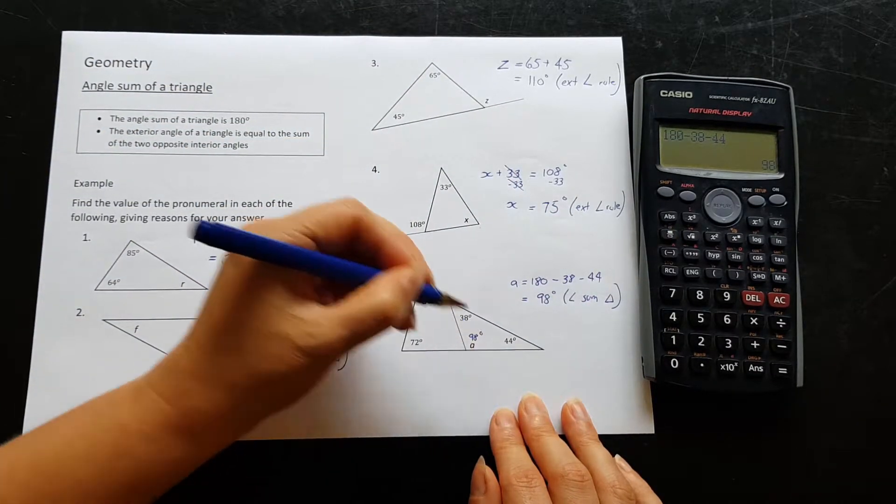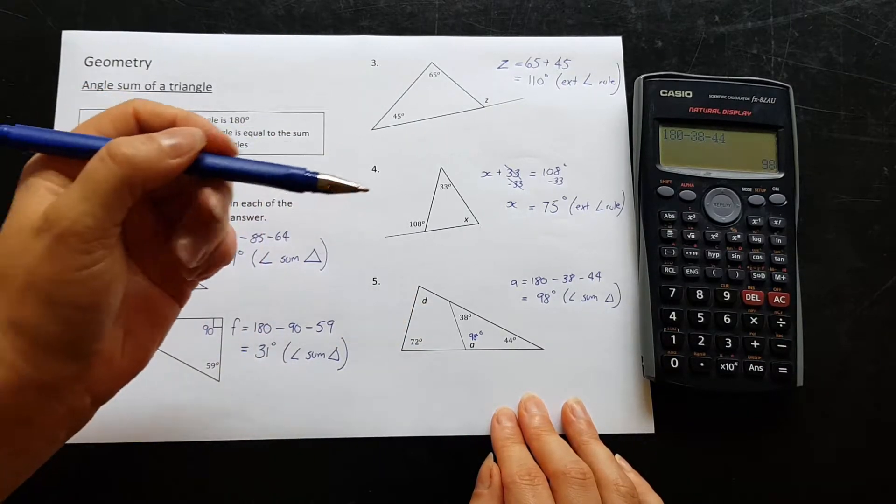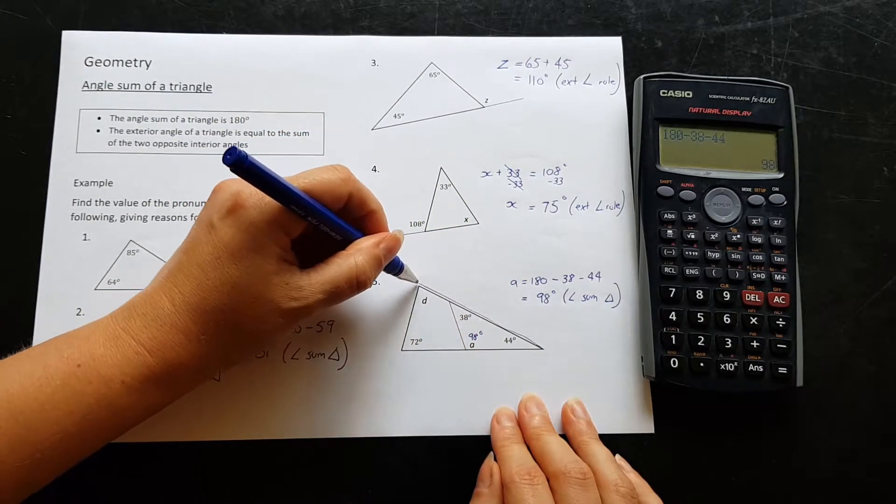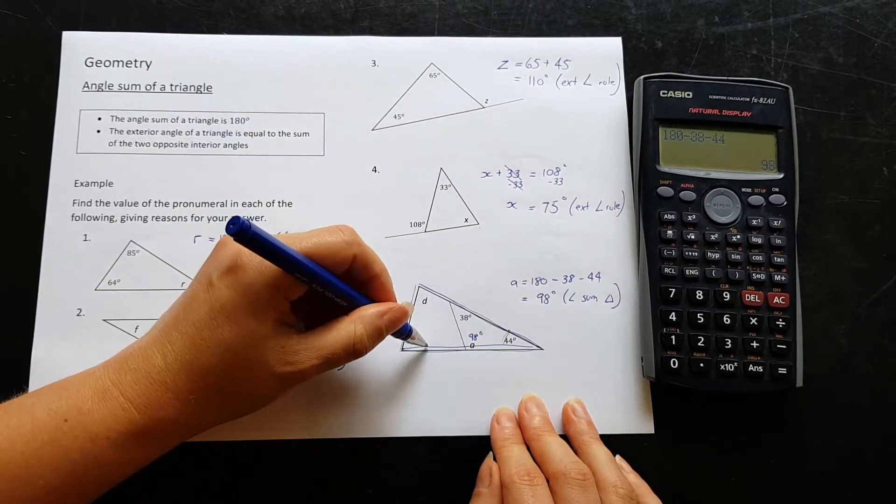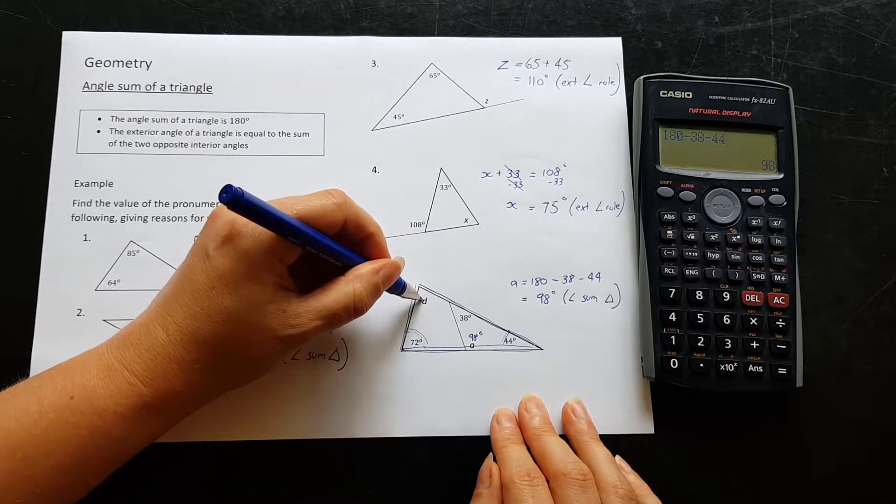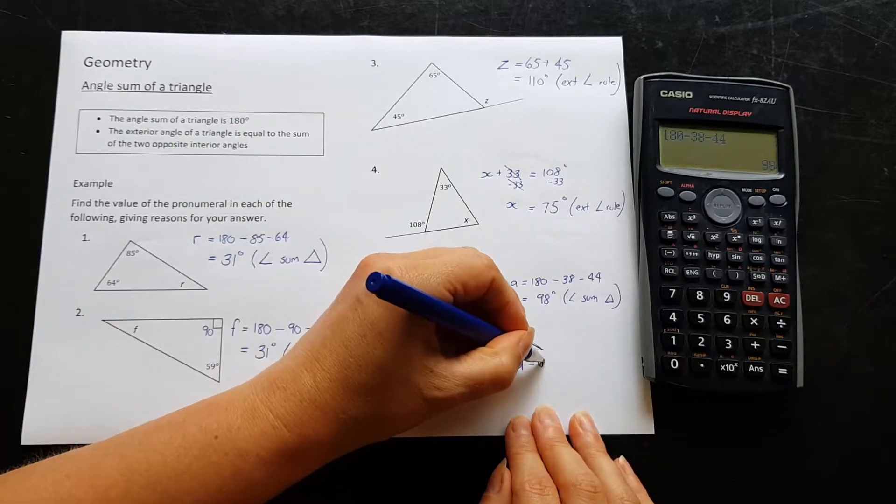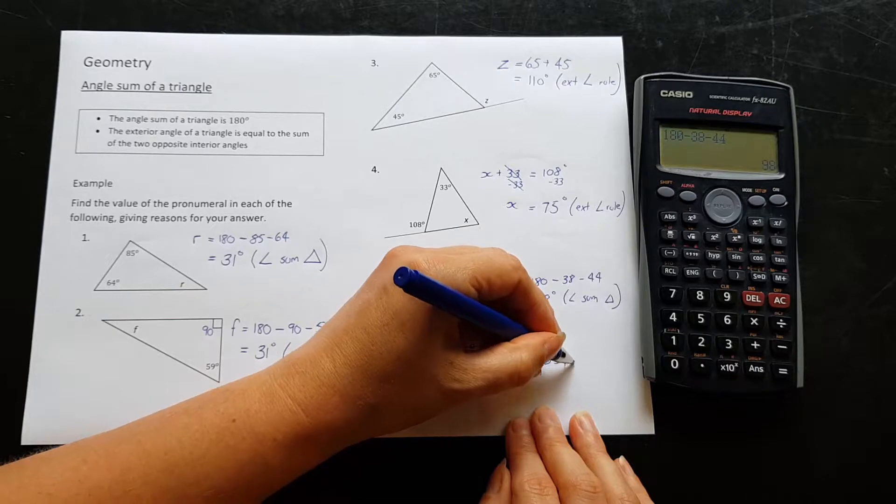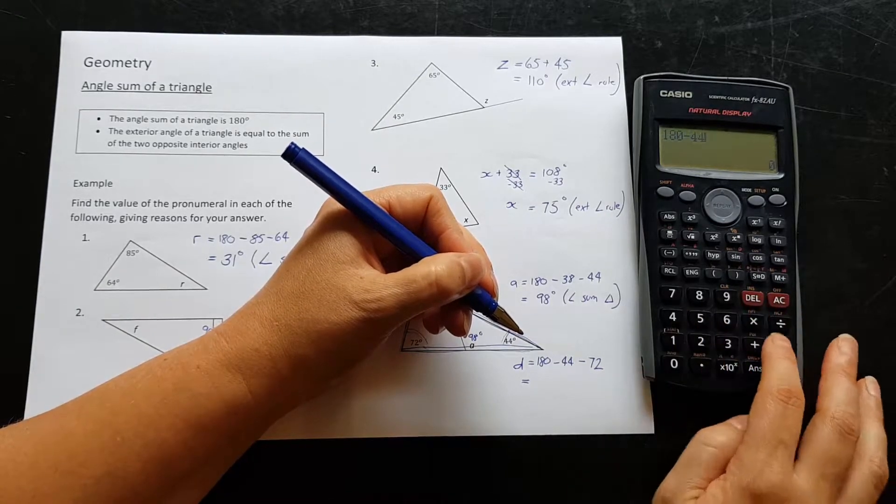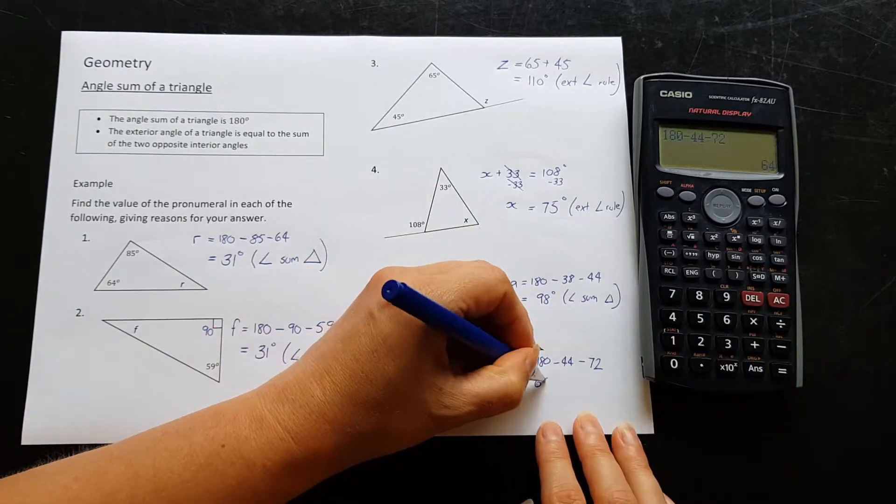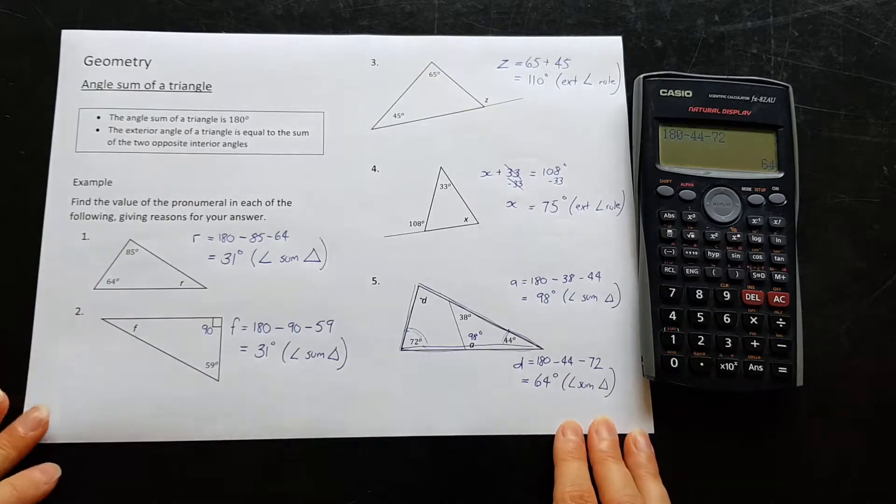Okay, so now that we know this one's 98 degrees as well, will that help us to find this letter d out here? Well, what I can actually do is look at this big giant triangle that goes around the outside. Okay, I know 44 over here in this corner, 72 over here in this side, so that leaves my third angle. Okay, so d is going to be equal to 180 minus 44 minus 72. Typing it in, we get 64 degrees, and that was also angle sum of a triangle, the rule that we used.